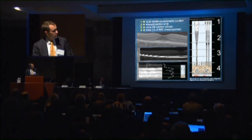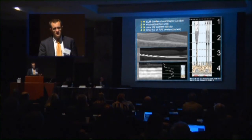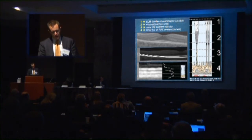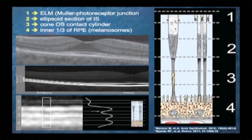Rick Spade and his group did anatomic correlations to these OCT findings to identify what we're actually looking at. What we know is: the first line is the ELM, the second is either the ellipsoid section of the inner segment — commonly called the ISOS junction — and the third line is the cone outer segment contact cylinder, or the outer segment RPE junction. This third line is often what we see disappearing first, followed by changes at the ISOS junction.